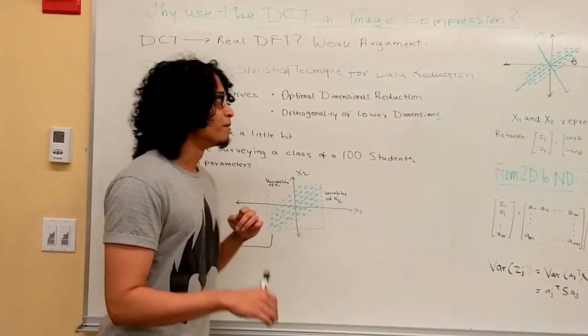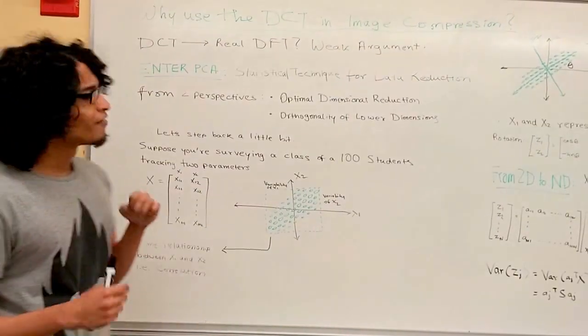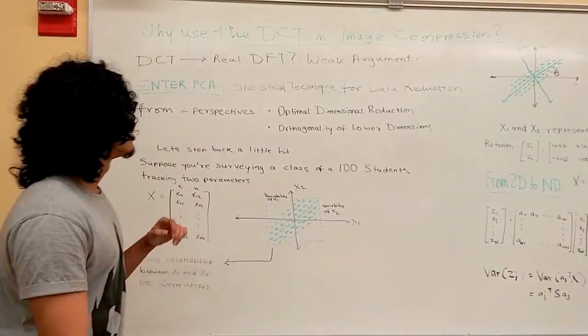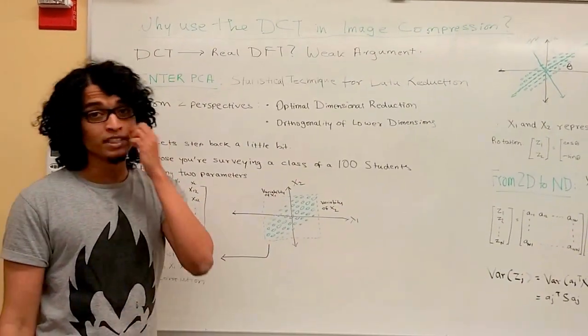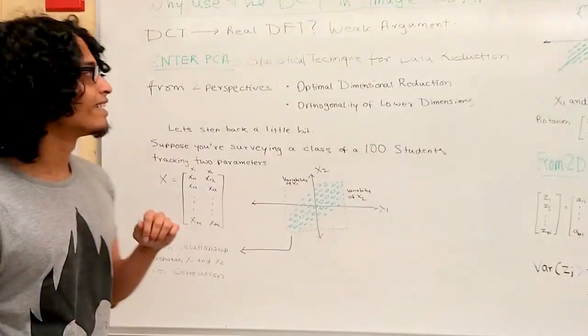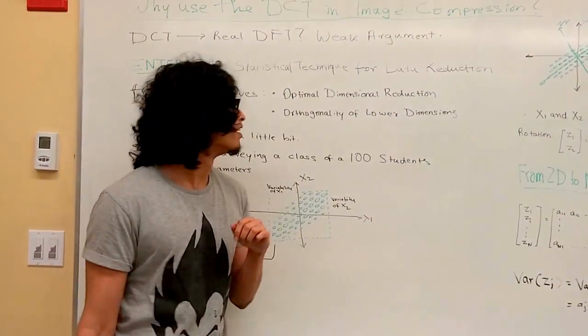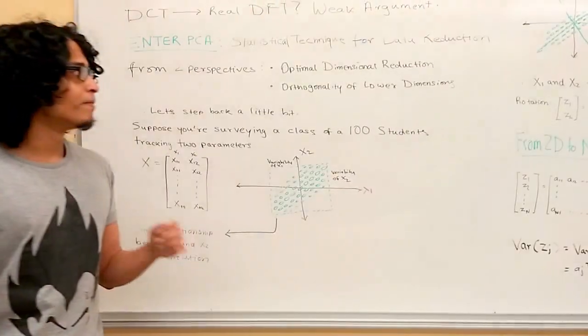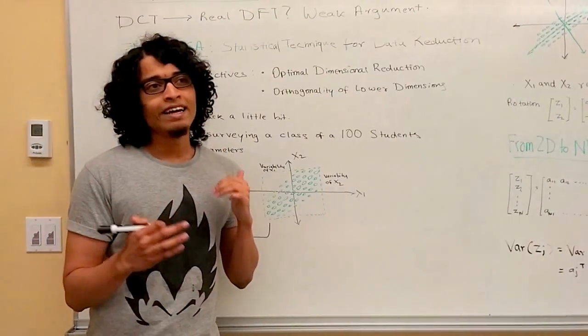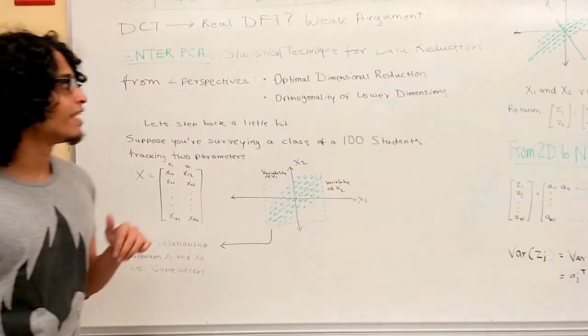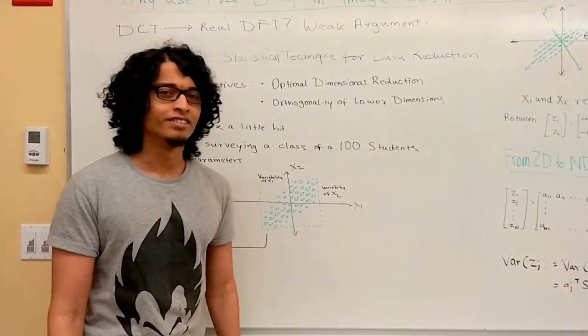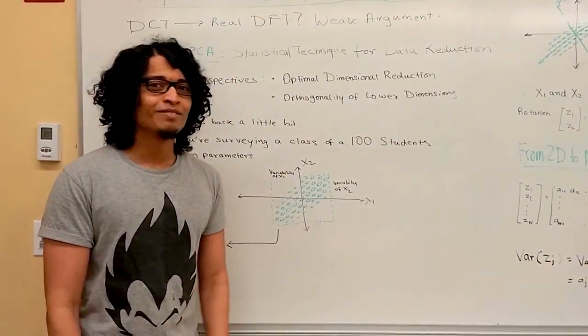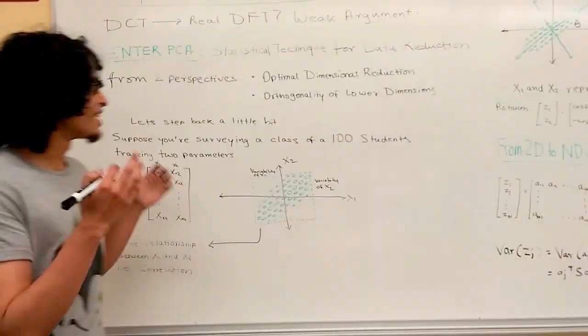To understand why that is, we need to know something a little bit about principal component analysis, which is a statistical technique for data reduction. It works from two perspectives: one being the optimality of dimension reduction and the orthogonality of lower dimensions. What does that mean? Let's step back a little bit.